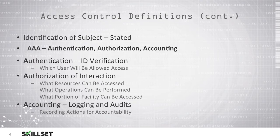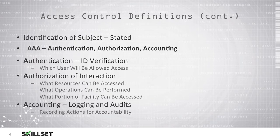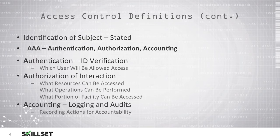The first A is authentication. At this stage, we take the identification that was presented to us by the subject, such as their username, and we verify that they are the actual person associated with that identity. A common method to do this is using a password. When an individual presents their username, they are identifying themselves, and when they present their password, they are authenticated as the actual individual who holds that identification. At this step, we also ensure that the user is on the list of users allowed to access that system.